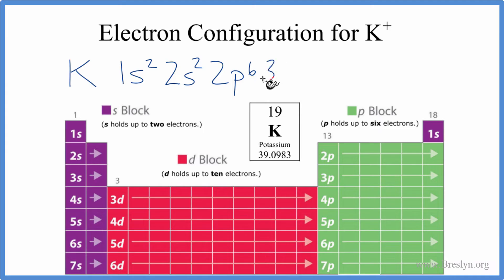3s2. Then we go to 3p. Let's put 3p6. We've used 18 of these electrons. If you add these numbers up, that's 18. So we go to the 4s. And s can hold up to 2, but we only need 1 to get to 19, so we'll just put a 1 there. And that is the electron configuration for potassium.